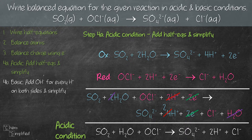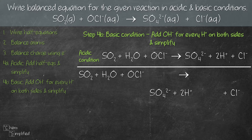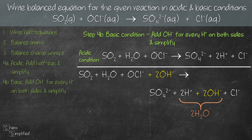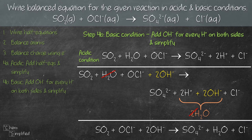To write the equation for basic condition, we add OH⁻ on both sides of the equation for every H⁺ we see. From our acidic equation we have 2H⁺ on the right, so we add 2OH⁻ on both sides. The 2OH⁻ combines with the 2H⁺ on the right to form 2H₂O. We now have H₂O on both sides, so we simplify, leaving 1H₂O on the right. The final equation is: SO₂ + OCl⁻ + 2OH⁻ → SO₄²⁻ + H₂O + Cl⁻. That is our balanced equation in basic condition.